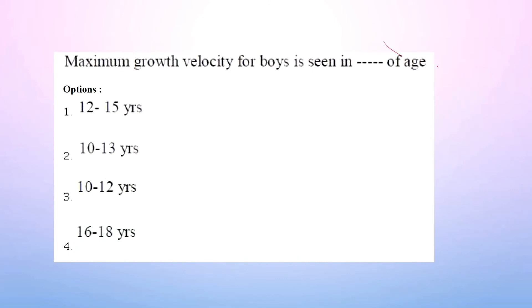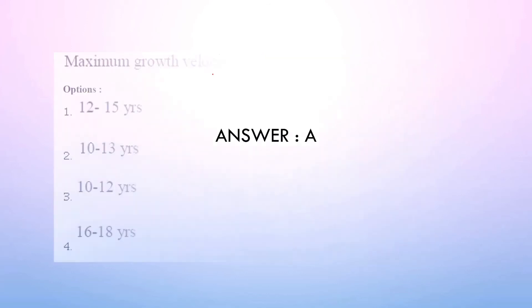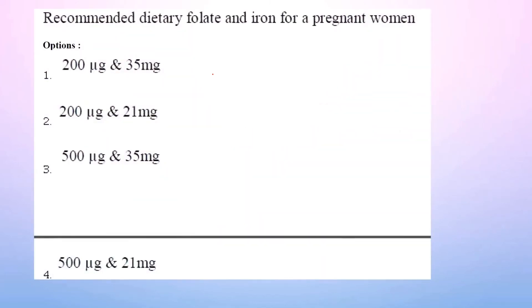PEM suffering adult needs 60 kilocalorie energy and 2 grams per kg of protein. Next question: maximum growth velocity for boys is seen at what age? 12 to 15 years, 10 to 13 years, 10 to 12 years, 16 to 18 years. The correct option will be 12 to 15 years. That's a common sense question.